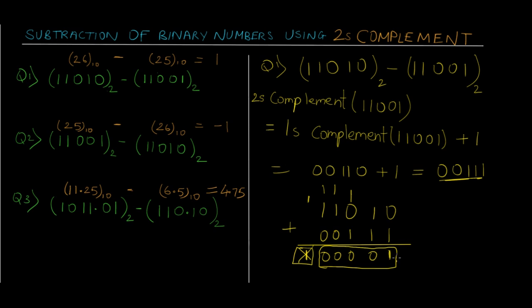When we get a carry, the answer is mostly going to be positive. This is the final answer and it corresponds to 1 in decimal as well — you can convert this binary number to decimal and get the value of 1, that is 2 raised to 0 which equals 1. Now let's see question number 2, which is 25 minus 26 — subtracting a larger number from a smaller number.